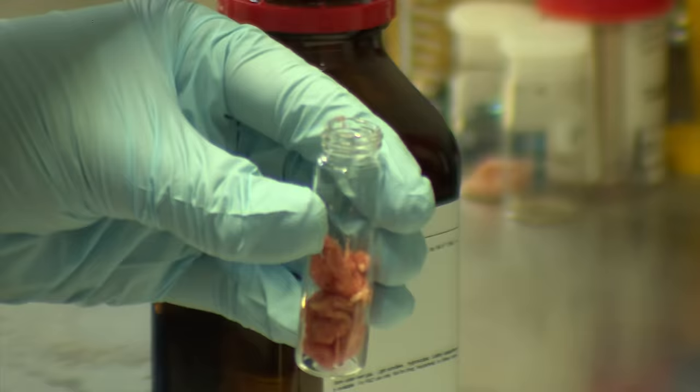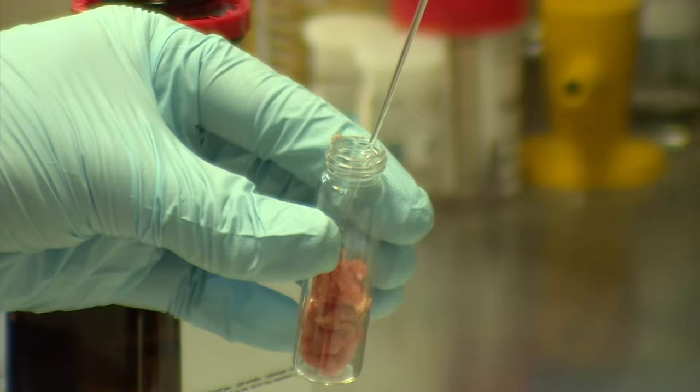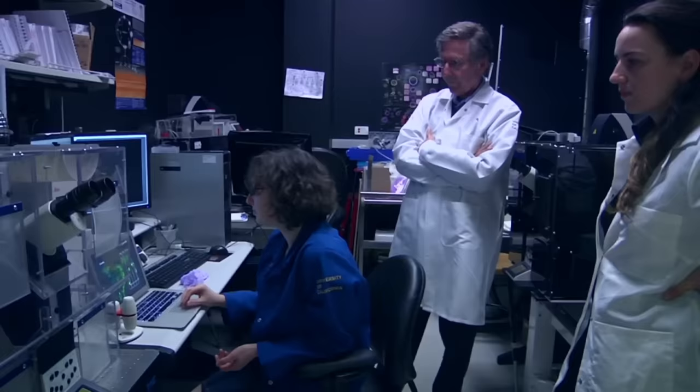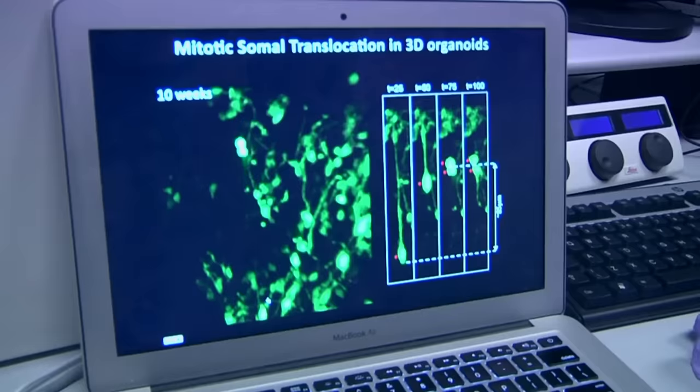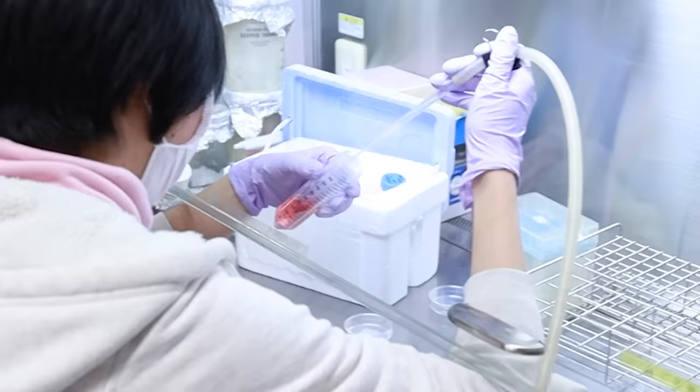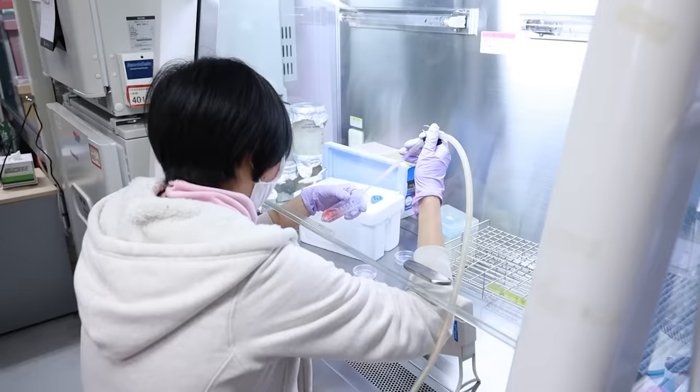That special FBS serum I just mentioned, that stands for Fetal Bovine Serum, which is collected from the dying fetuses of slaughtered cows. It's pretty gruesome. And so far, scientists have not found a way to create lab-grown meat without it. Why is it so important? And is there any way around it?